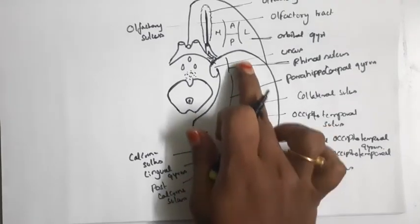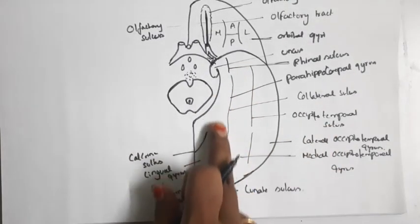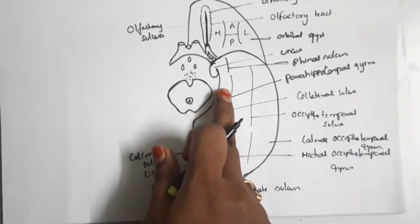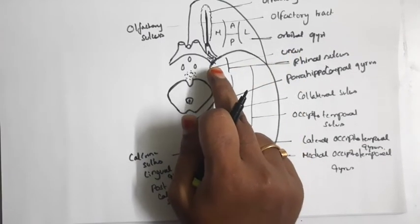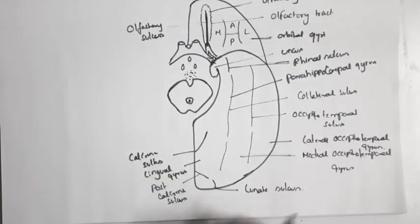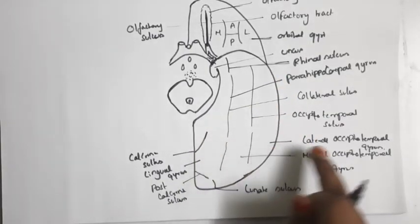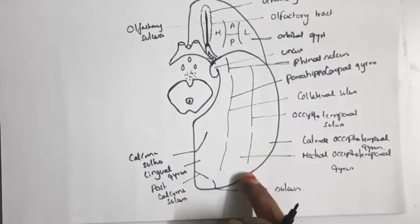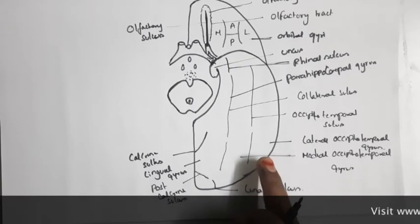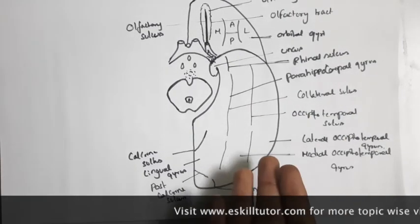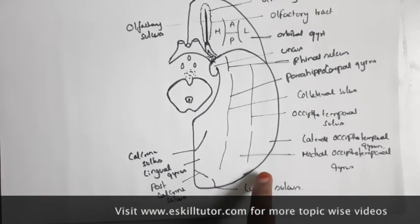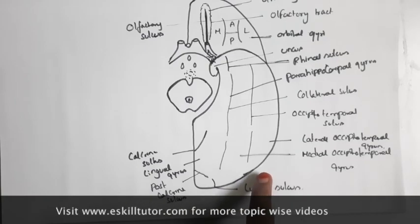This is the lateral occipitotemporal gyrus, and this is the medial occipitotemporal gyrus. Here we see the parahippocampal gyrus, which at its anterior end hooks backwards and medially — at that part it is known as the uncus, and at the uncus it is limited by the rhinal sulcus. This lateral occipitotemporal gyrus will continue at the inferolateral margin with the superolateral surface and continues with the inferior temporal gyrus.